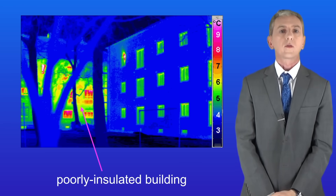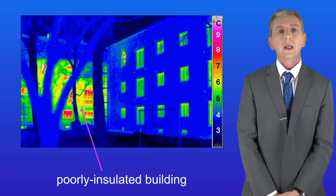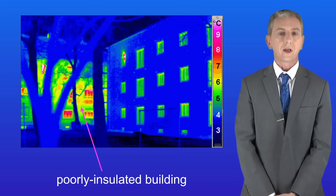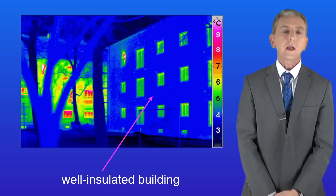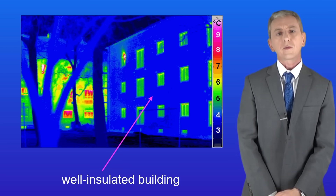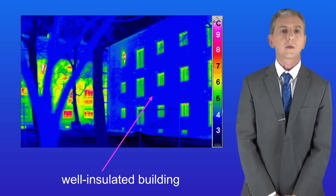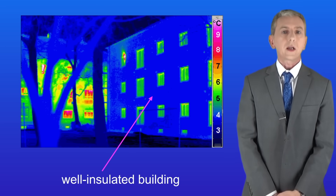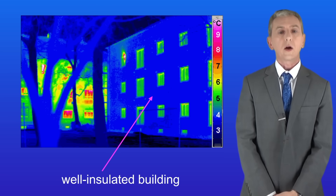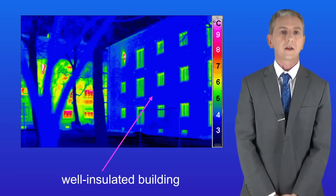I'm showing you here two buildings. This photograph is taken with a camera which can detect thermal energy. On the left hand side we've got a poorly insulated building and you can see that a lot of thermal energy is passing out through the walls and the windows of the building. The building on the right hand side is well insulated and you can see that in this case there's much less thermal energy passing out of the building. So in this video we're looking at the factors that affect how quickly a building cools down, in other words how quickly a building loses thermal energy.